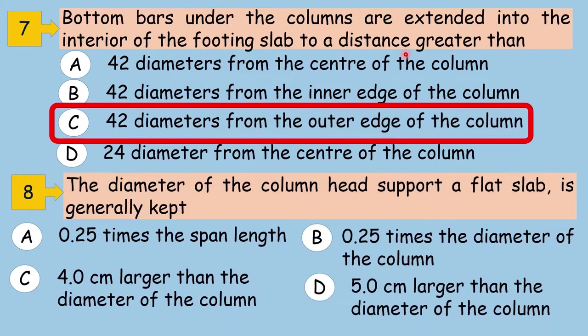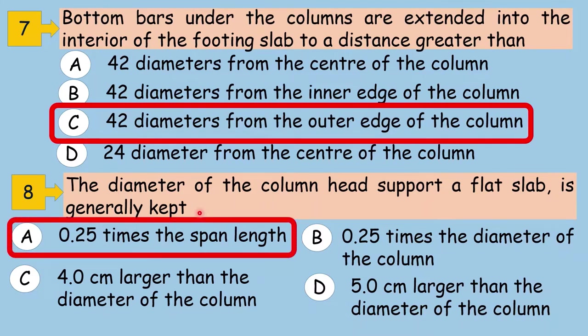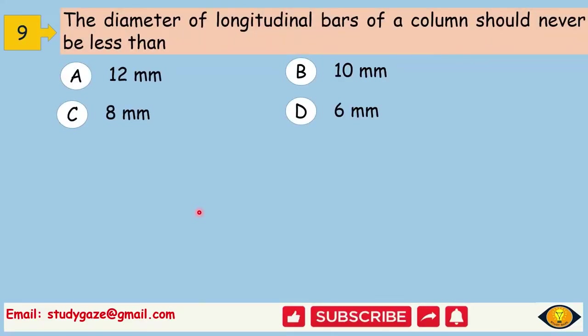The diameter of the column head support a flat slab is generally kept. Answer is 0.25 times the span length. The diameter of longitudinal bars of a column should never be less than. The answer is 12mm.